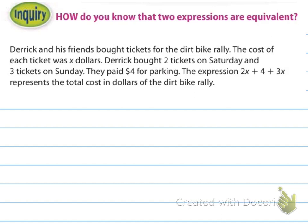And so, here's the first example they want to use. Derek and his friends bought tickets for the dirt bike rally. The cost of each ticket was X dollars. Derek bought 2 tickets on Saturday and 3 tickets on Sunday. They paid $4 for parking. The expression 2 times X plus 4 plus 3 times X represents the total cost in dollars of the dirt bike rally.